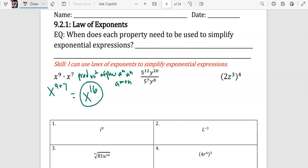On the next one, we have a fraction. That's going to be quotient of powers. So that would be 5 to the 12 minus 7, and y to the 20 minus 8. So that's 5 to the 5th power, and then y to the 12th power.